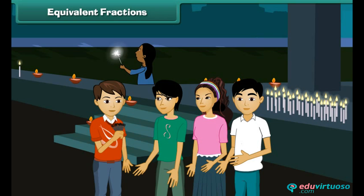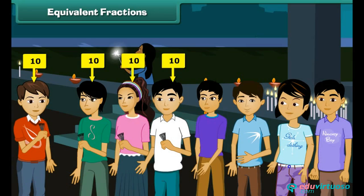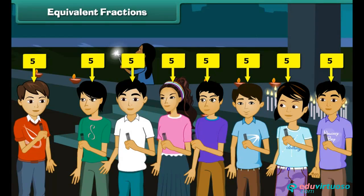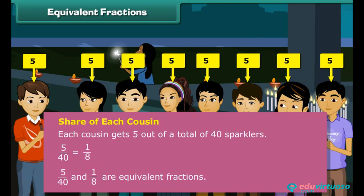Rishabh is celebrating Diwali with three cousins. He has forty sparklers. He divides the sparklers into four equal groups of ten each. Quite unexpectedly, four more cousins of Rishabh arrive to celebrate the festival with him. Now Rishabh divides the sparklers among the eight cousins including himself. Each cousin gets five out of a total forty sparklers. Five by forty is equal to one by eight. Thus the share of each cousin in the whole is one by eight.